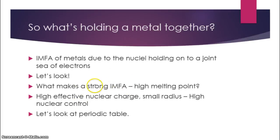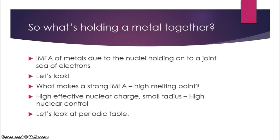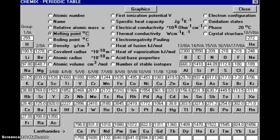So if the IMFA is due to the nuclei holding onto the sea of electrons, what makes a strong IMFA? To get a strong IMFA, you have to have a high effective nuclear charge and a small radius — something we called in class a high nuclear control. If you remember nuclear control, it is related to the periodic table. This periodic table actually lists the melting points in degrees Celsius, so we can look at the trends and relate those to nuclear control.